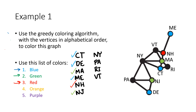Now we're up to New York. New York is connected to Connecticut, a blue vertex, and also to green vertices Massachusetts and New Jersey. So it can't be blue, it can't be green, but it's not connected to anything red, so New York can be red. Next up is Pennsylvania. Pennsylvania is connected to Delaware, which is blue; to New Jersey, which is green; and to New York, which is red. So for the first time we have to use color number four, which is orange. Rhode Island is connected to a blue and a green, but it can be red. Vermont is connected to a green and a red, but not to anything blue, so we can use blue for Vermont.